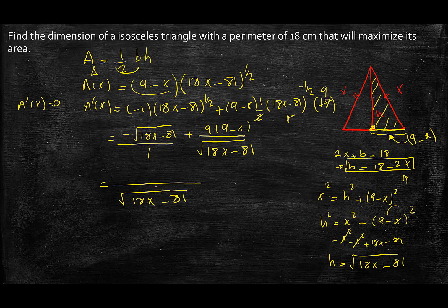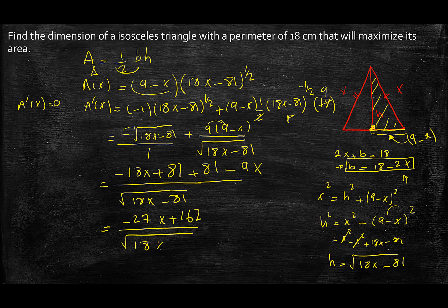And to take the common denominator, it would be 18x minus 81. So on the top, if I multiply that by itself, I will have minus 18x plus 81. And I multiplied the negative into it as well. And then plus, I can expand this now. So 9 times 9 is 81, plus 81 minus 9x. As you can see, 81 and 81 will add up to 162. And 9 and 18 is 27, so negative 27x plus 162 over 18x minus 81.